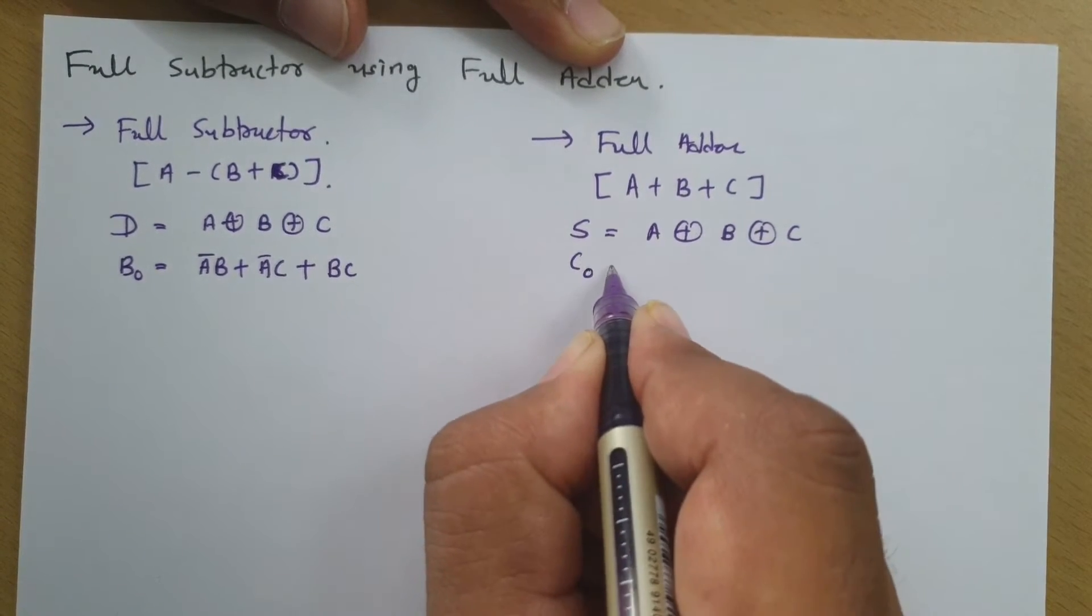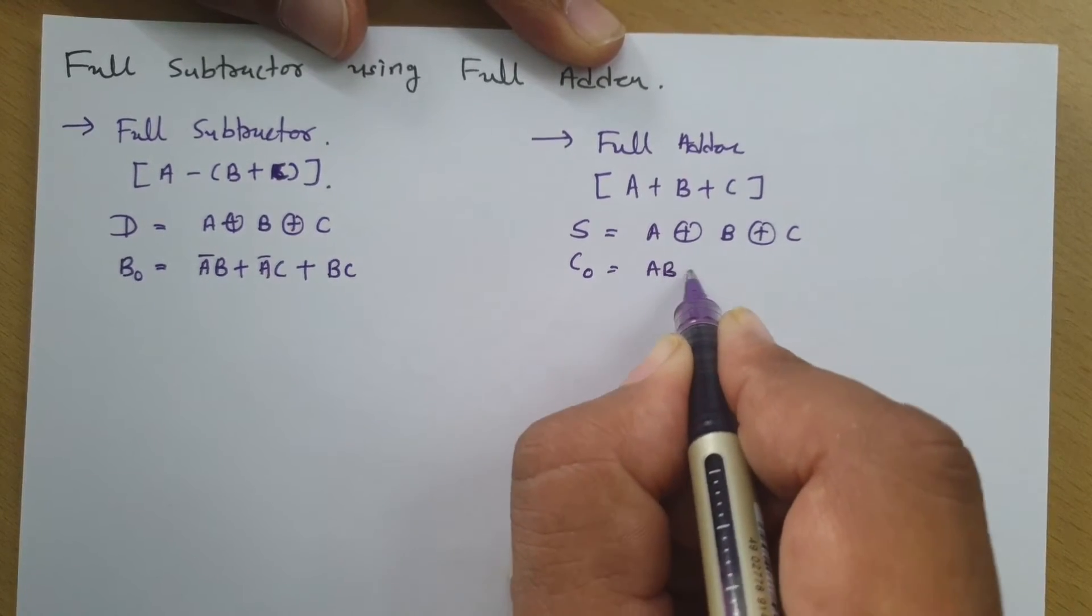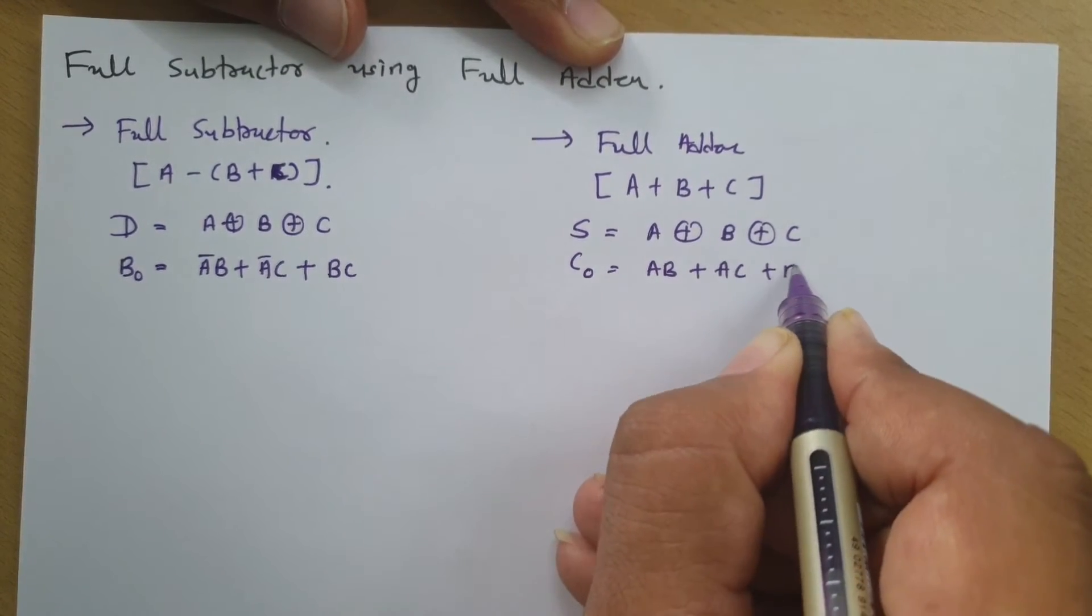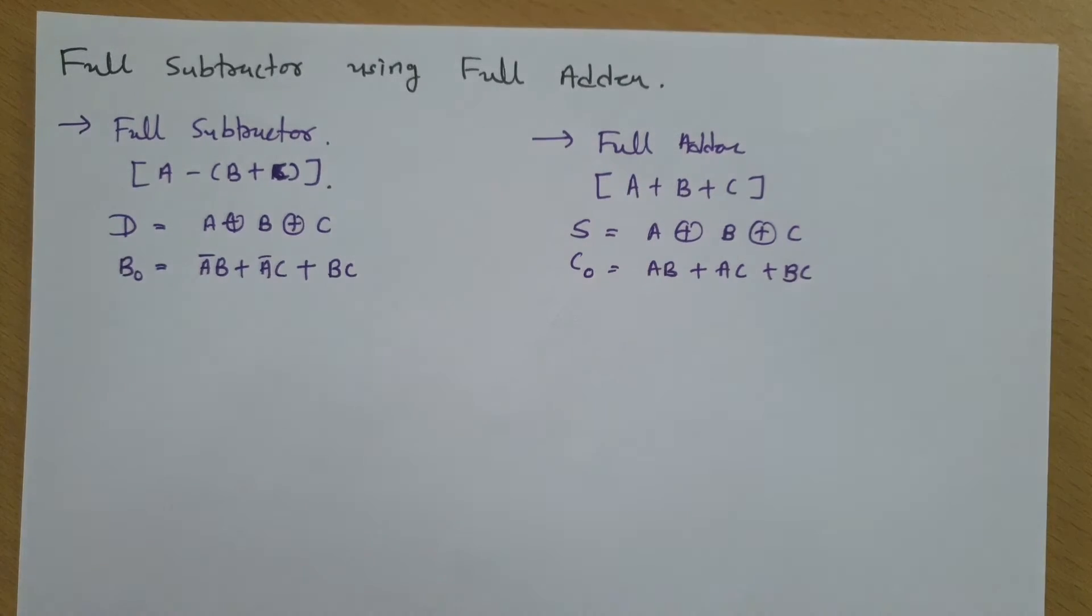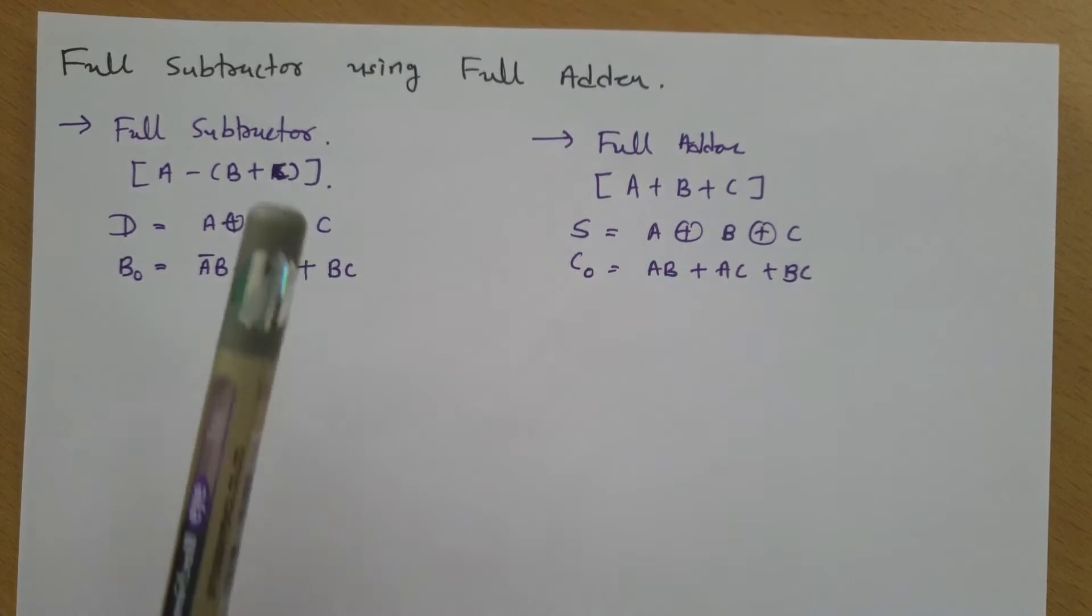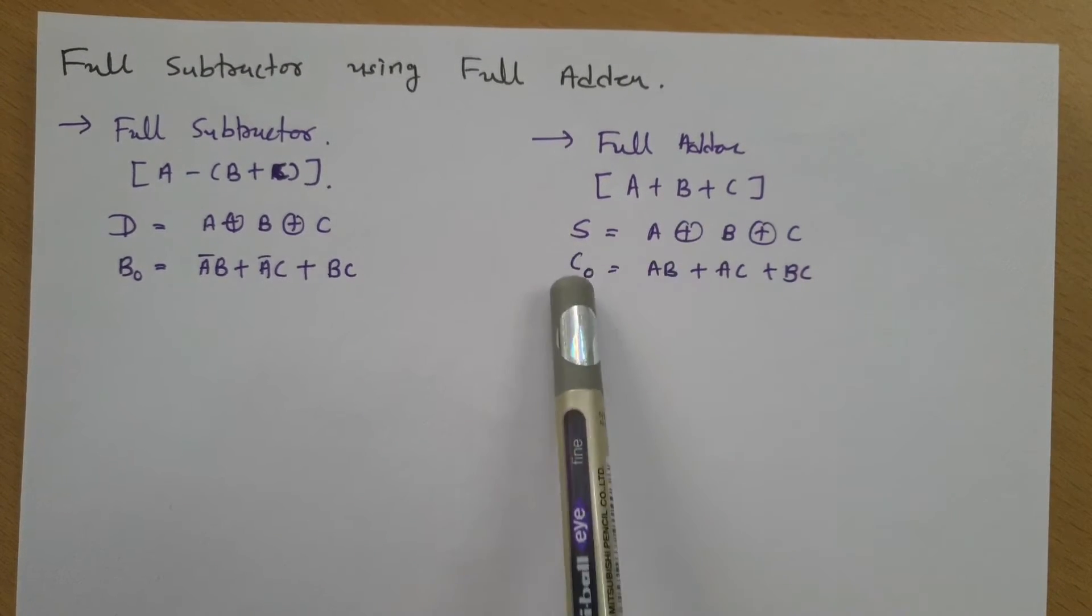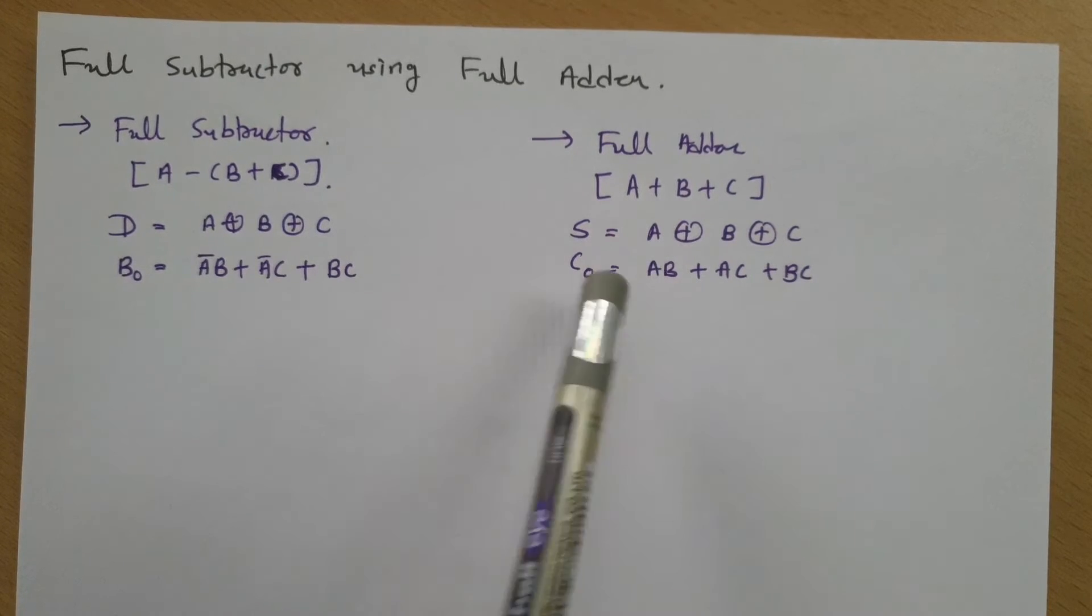And if you see carry, that is AB plus AC plus BC. This is how full adder and full subtractor circuits are there. And I have already derived both of these.